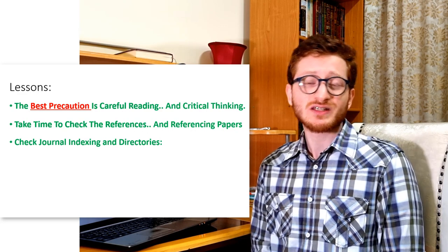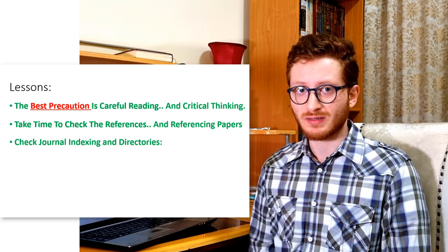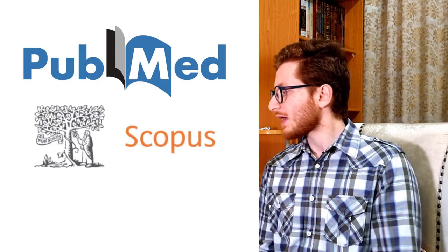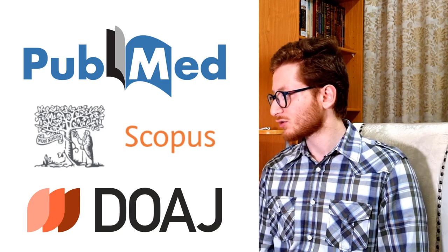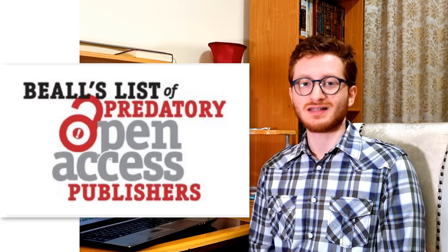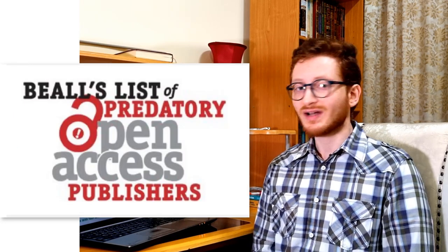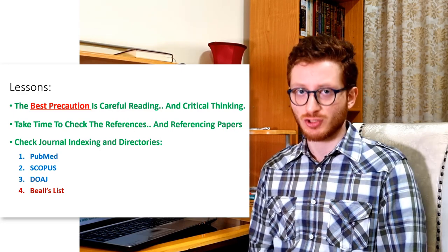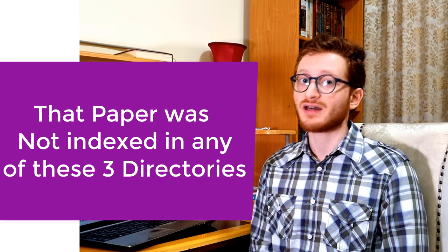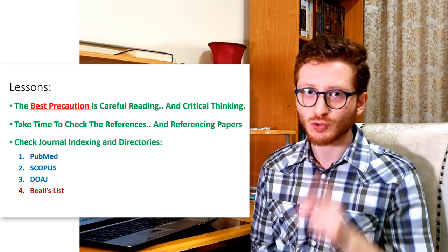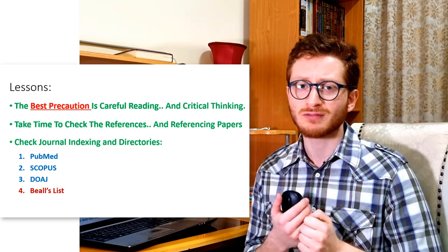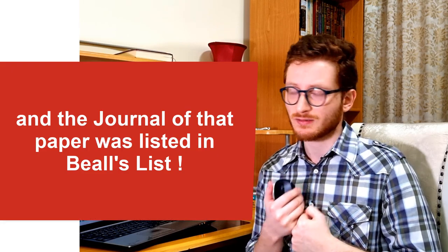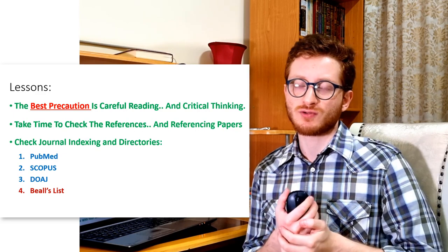Also, check journal indexing and directories. This is extremely important and extremely easy. There are four important indexing websites: PubMed, Scopus, DOAJ (the Directory of Open Access Journals), and Beall's list. The first three are in blue and the last one in red, because when you publish in an open access journal, you want your paper to be indexed in PubMed, Scopus, and DOAJ. You do not want your paper to be found in Beall's list of predatory publishers — it's like a blacklist of journals not trusted by many academics, which may harm your resume.